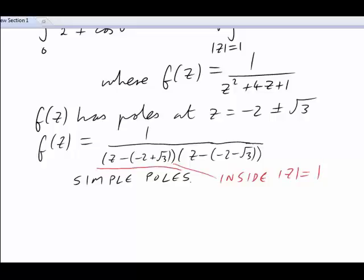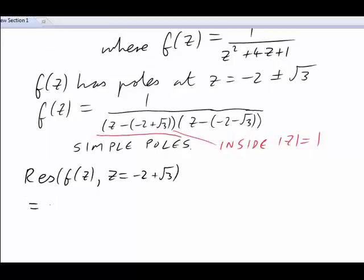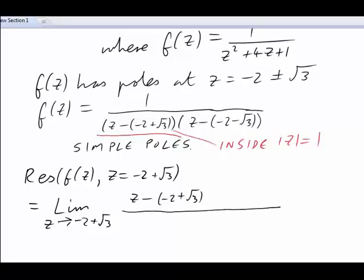We need to find the residue for f of z at that pole. We want the residue of f at the position z equals negative two plus root three. We have a definition for the residue for a simple pole. It is simply the limit as z approaches the dangerous value, and then we make a quotient with z minus the dangerous value on top and all the rest of the function is f of z.